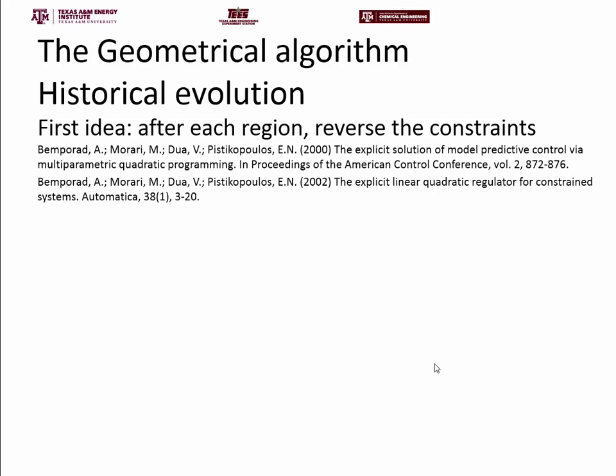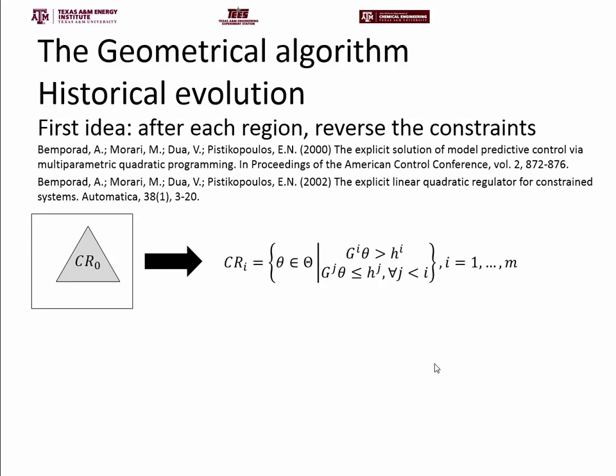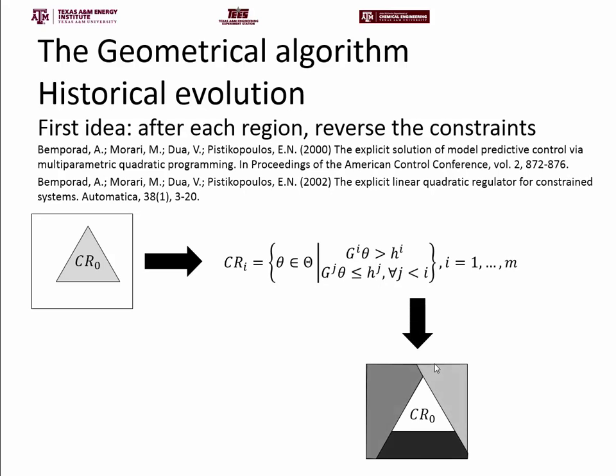The first version is the reversal of constraints, done by Bemporad, Dua et al. in 2000–2002. The basic idea is to start with one critical region — obtained using the basic sensitivity theorem or by solving the KKT conditions parametrically — and from that starting point, explore the rest of the parameter space using a specific formula to get the full partitioning.